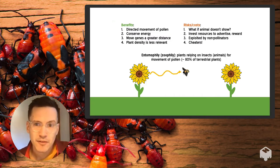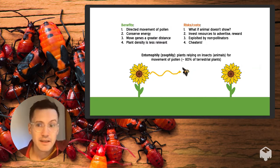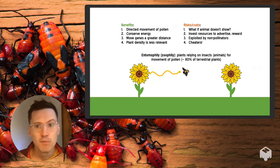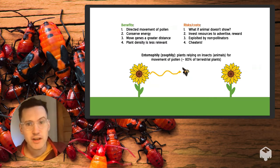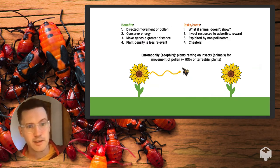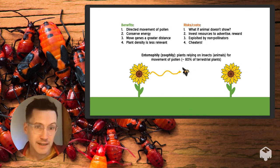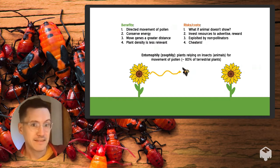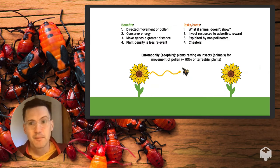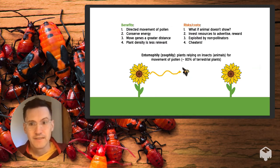Plants beginning to rely on animal-vectored pollen could realize a number of benefits. The movement of their gametes is now directed — instead of sending pollen into the wind and hoping for the best, insects are moving pollen from one flower to another specifically. This allows plants to conserve energy by producing less pollen and enables genes to travel a greater distance. However, this strategy comes with costs: you run the risk of the insect not showing up, and you need to invest in resources to advertise and reward your pollinators.